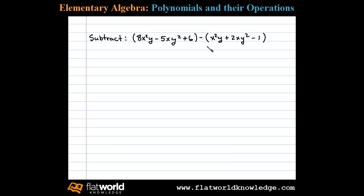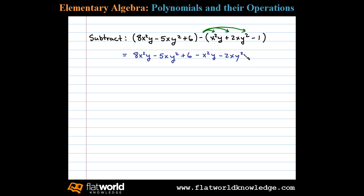To subtract polynomials, we apply the distributive property, remove the parentheses, and then combine like terms. Distributing negative 1 will change all the signs. That leaves us with negative x squared y minus 2xy squared plus 1.